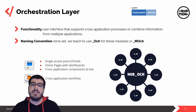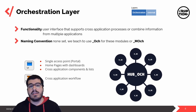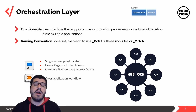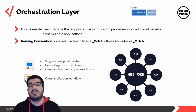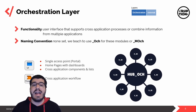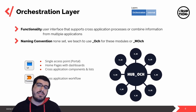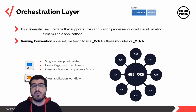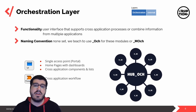In terms of elements, we have the UI elements and the process elements. On the UI side you have cross-application information and lists, a single point of access which is your portal, and several home pages with dashboards. In terms of processes, you just have a cross-application process running.